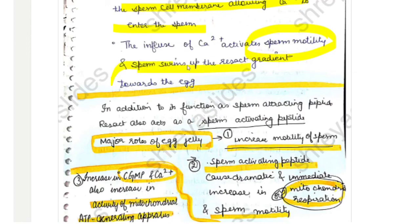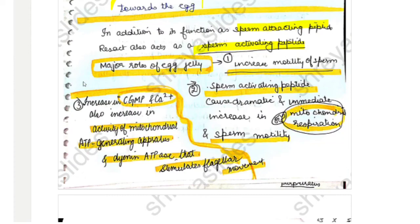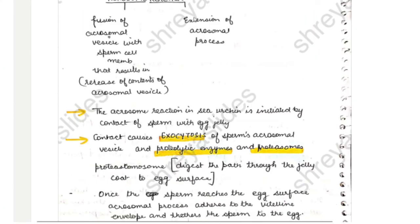In addition to attracting sperm, resact also acts as a sperm-activating peptide — it has two functions: sperm attraction and sperm activation. The major role of egg jelly is to increase sperm motility. Sperm-activating peptides cause a dramatic and immediate increase in mitochondrial respiration and sperm motility, and also increase cGMP, calcium, and the activity of the mitochondrial ATP-generating apparatus and dynein ATPase, which stimulates flagellar movement.